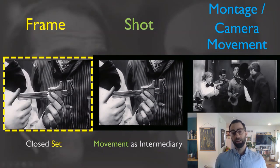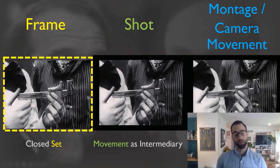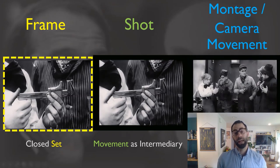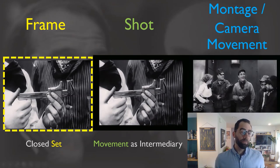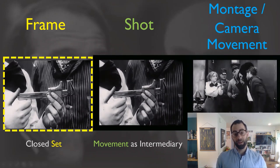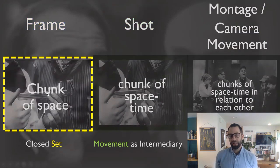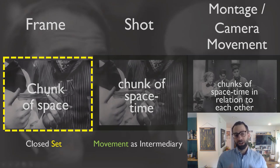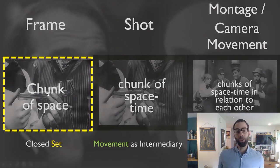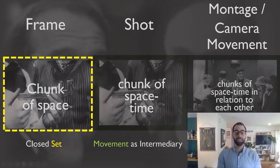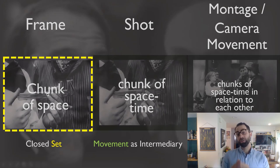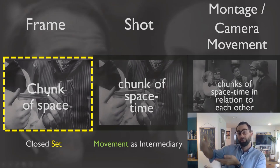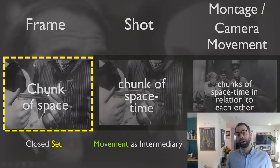If you've studied cinema, you know terms like shot, montage, and camera movement. For Deleuze, montage simply means editing, and shot means a continuous recording of space-time. Frame refers to the fact that a cinematographic image is framed, usually with a rectangular frame. In a Deleuzian sense, the frame is literally a chunk of space — before recording time, you cut out a slice of space. A shot is a chunk of space-time. And montage or camera movement are chunks of space-time in relation to each other.